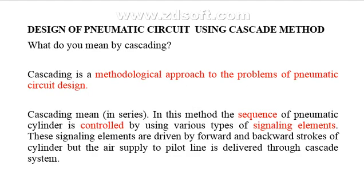First of all, what is meant by cascading? Cascading is a methodological approach to the problems of pneumatic circuit design. The cascading meaning is 'in series.' In this method, the sequence of pneumatic cylinders is controlled by using various types of signaling elements. These signaling elements are driven by forward and backward strokes of the cylinder, but air supply is delivered through the cascade system. Finally, cascading is the process of identifying the sequence of operations involved in the pneumatic cylinder for the completion of a particular task or application.